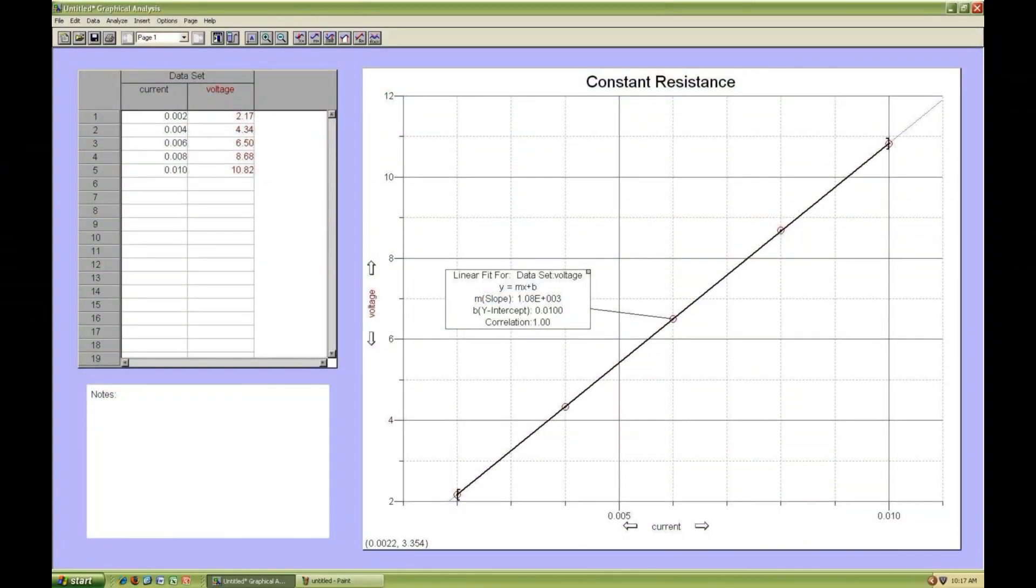We have used graphical analysis to make a plot of voltage versus current. A linear fit to the data yields a slope nearly equal to our measured resistance.